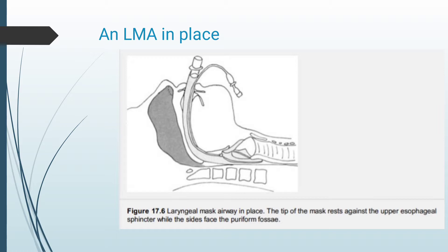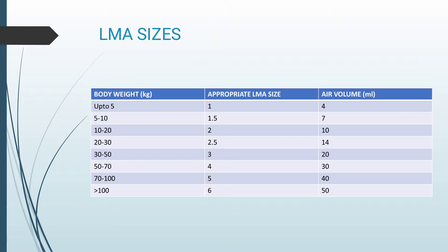The tip of the mask rests against the upper esophageal sphincter. This chart describes the LMA sizes available: for up to 5 kg, size 1; 5–10 kg, size 1.5; 10–20 kg, size 2; 20–30 kg, size 2.5; 50–70 kg, size 4; 70–100 kg, size 5; and for patients over 100 kg, size 6 is used. The third column shows the amount of air which needs to be inflated into the cuff.